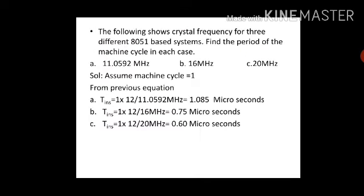Let me take a simple example to show how we do the calculation. The following shows crystal frequencies for three different 8051-based systems: find the period of the machine cycle in each case. The first clock frequency is 11.0592 MHz, the second is 16 MHz, and the third is 20 MHz. Since no specific instruction machine cycle count is given, we assume one machine cycle.